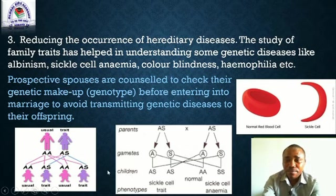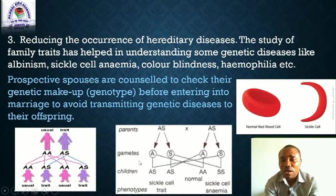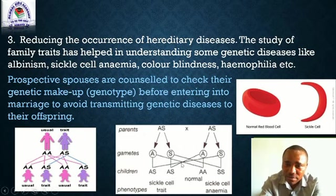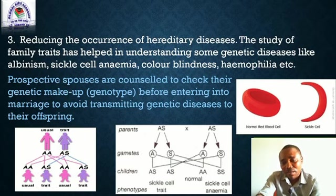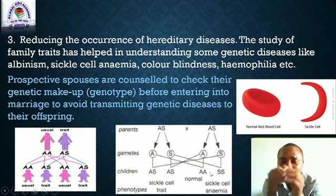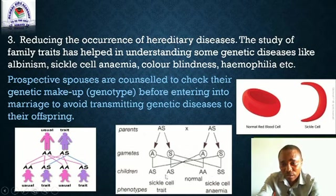Now let's look at the second picture. This is a cross between a male and a female, both of whom are carriers of the sickle cell gene. By crossing these two, we will end up having four children, as you can see in this picture. Two or three are healthy, while one is sickle. Meaning this child here is suffering from sickle cell anemia. Is that clear? So the question is: is this union advisable? The answer is no. As you can see from this picture, this union is not advisable.